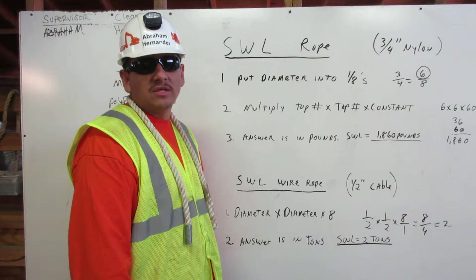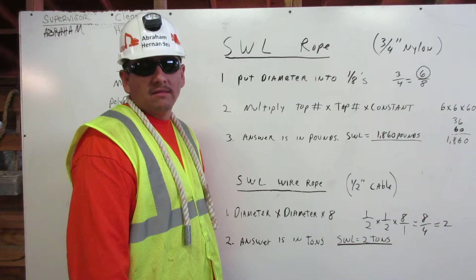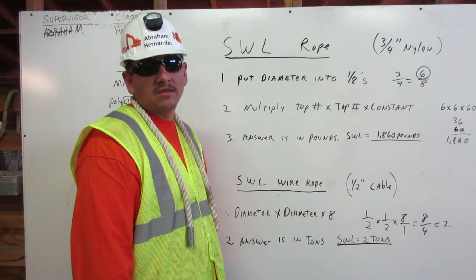Here I'm going to explain to you how to calculate safe working load for rope and wire rope. This safe working load is a number that represents one-fifth of the rigging capacity. Let me explain.